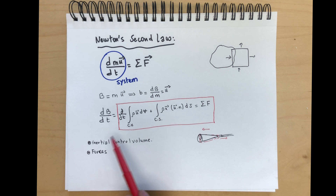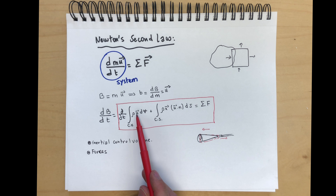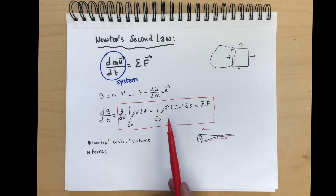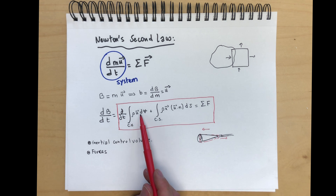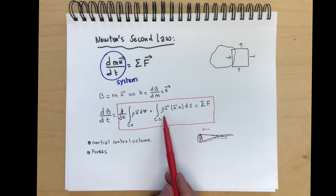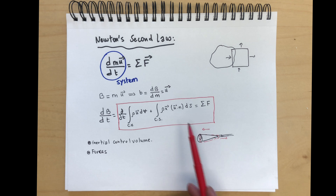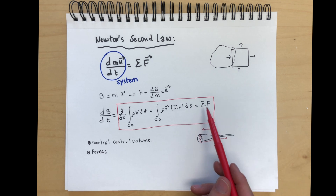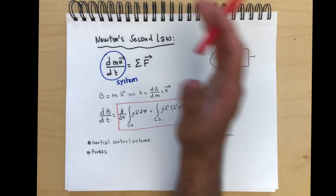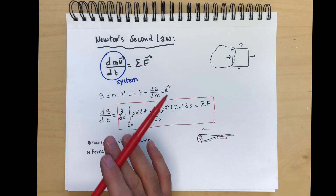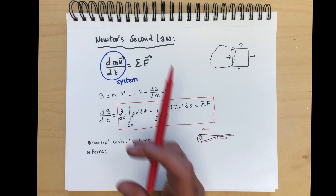A few simplifications occur when the velocity is aligned with the surface, so that U dot n is aligned with the inlet, and this simplifies into a summation of momentum leaving and momentum coming in. Just like with mass conservation, where we had the rate of change of mass inside a control volume minus mass in plus mass out equals zero — in this case, rate of change of momentum within the control volume minus momentum in plus momentum out equals the summation of forces exerted on the entire control volume.